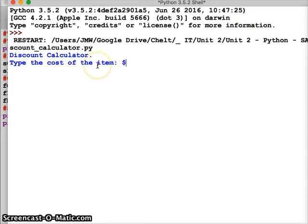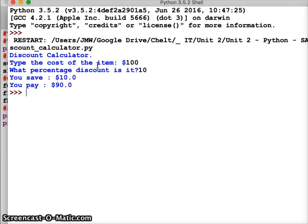So I'm going to say $100, let's keep it simple. Press enter. It goes to the next part of the program. What percentage discount is it? Let's make it 10% so we can check it easily. So press 10 and press enter. And it gives me the calculations. You save $10 and you pay $90.